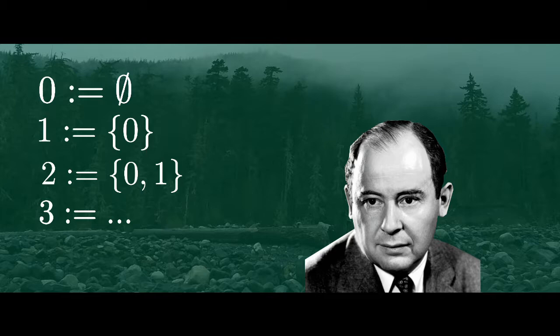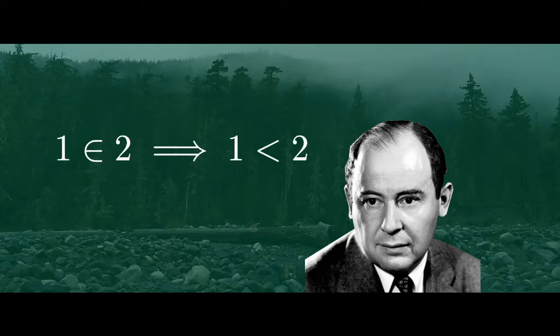Further, there is a natural ordering on these numbers. That is, we can say that 1 is less than 2 because the object 1 is in the set 2. Another way of writing this is: 1 is in 2 implies that 1 is less than 2, and this ordering is then naturally extended to all natural or whole numbers. This provides a foundation of arithmetic, the most basic form of mathematics.